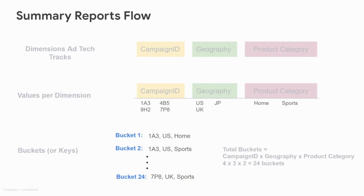In our example, we're going to pretend that an ad tech wants to track three dimensions: campaign ID, geography, and product category. Each of these dimensions has the following values. For campaign ID, you can see four different campaign values. For geography, you can see three different values. For product category, we have two values: home and sports. These various values make up the aggregation buckets, which are also referred to as keys.